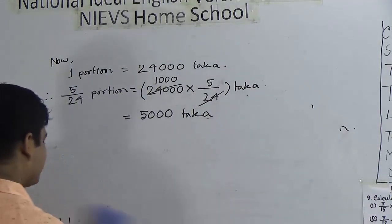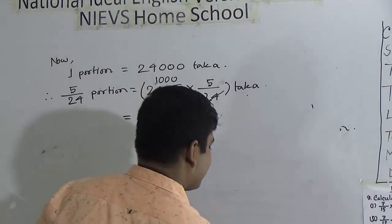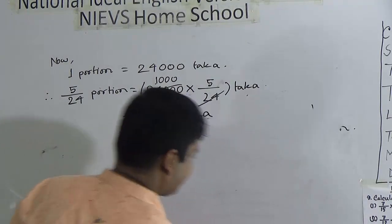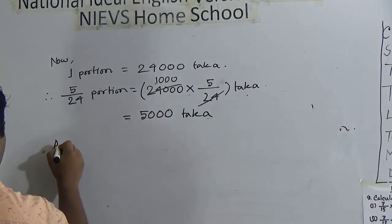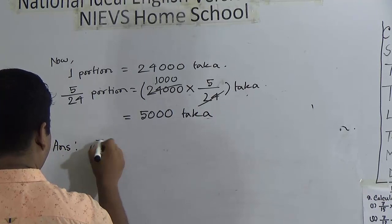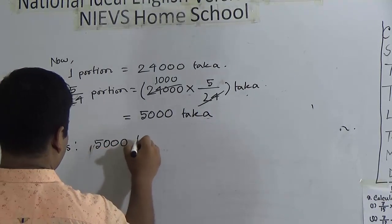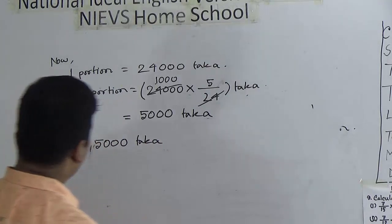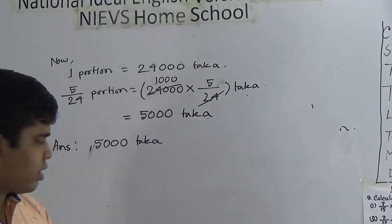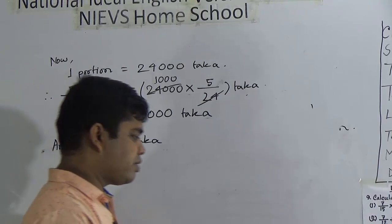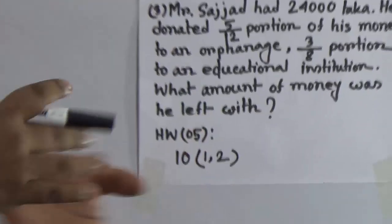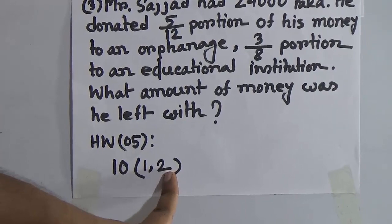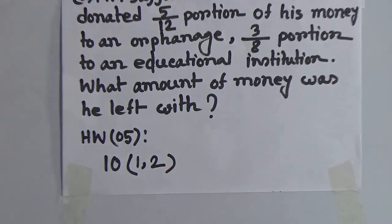As our solution is done, we must write the answer: 5,000 takas was left with him. This is the answer of this question. My dear students, from the same chapter — Exercise 6B, question number 10 — you have to solve sub-numbers 1 and 2 as your SW.